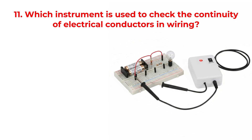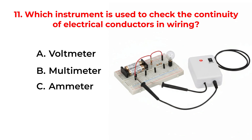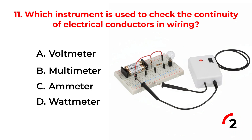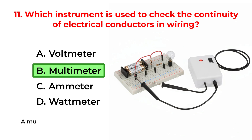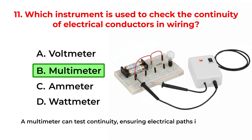Which instrument is used to check the continuity of electrical conductors in wiring? A. Voltmeter. B. Multimeter. C. Ammeter. D. Wattmeter. The correct answer is Option B: Multimeter. A multimeter can test continuity, ensuring electrical paths in wiring are intact.